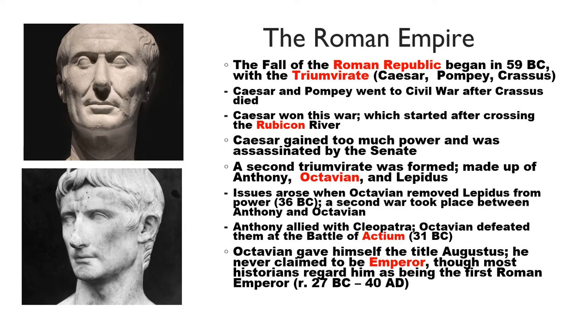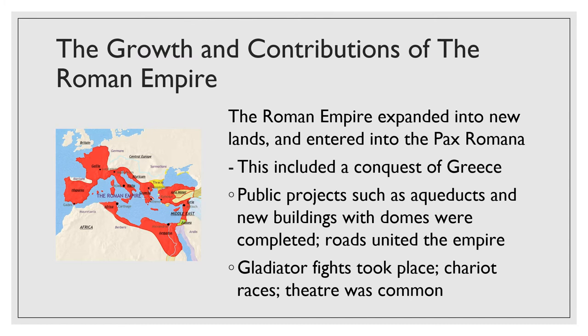Octavian gave himself the title Augustus. He never claimed to be emperor, though most historians regard him as the first Roman emperor — and in reality he essentially acted as such, given the power he controlled. He ruled between 27 BC and 14 AD. So Octavian was the first real Roman Caesar.